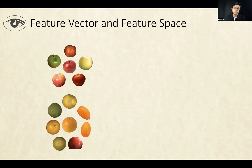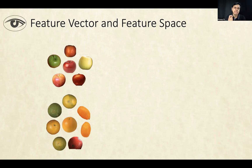Let's consider the problem of classifying two fruits: apples and oranges. The question is how does a machine learning algorithm represent these images of fruits so that it can separate between the two classes? Images are very complex entities and it's very difficult to represent them or deal with them. So the idea we start with is that of a feature vector, where we try to extract some numbers out of every single sample or image and represent each sample as a vector.